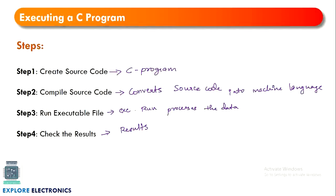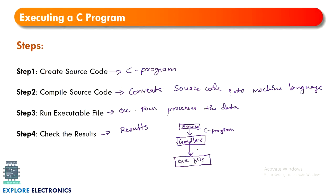Let's understand with a small flowchart. First we have a source code which is given to the compiler. Here it is a C program. Once the compiler compiles your C program, it creates an executable file — the compiler output is an exe in machine language. Once the executable file is ready, we run it and get the result. This is the basic execution flow of a C program.